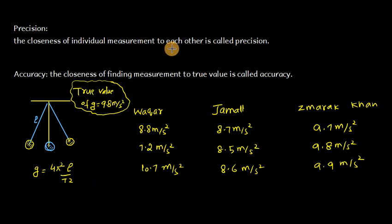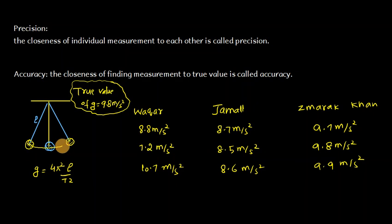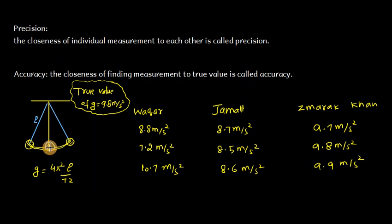To summarize: the closeness of individual measurements to each other is called precision, and the closeness of a measurement to the true value is called accuracy. Now consider the pendulum experiment. The length of the pendulum is measured from the pivot point to the center of the metallic bob.